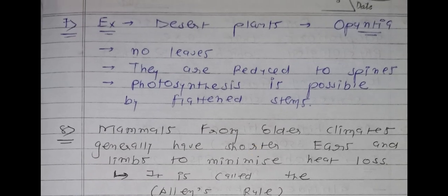Point number seven: some desert plants like Opuntia have no leaves — leaves are 100% absent. They are reduced and modified into spines. Spines are a protective organ — because of the presence of spines, plants get protection from herbivorous animals. Photosynthesis is done by flattened stems. In this particular desert plant, the stem performs the process of photosynthesis instead of leaves.